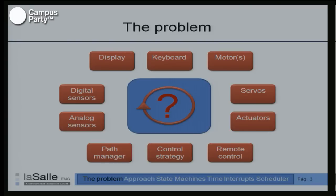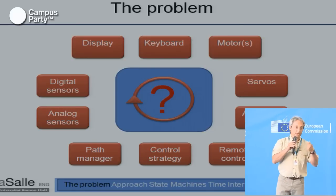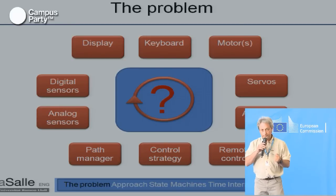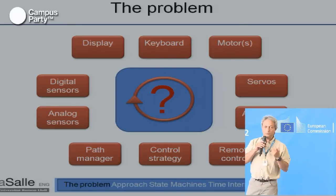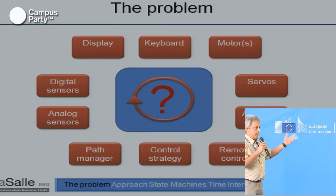All of this is related because digital sensors — doing ranging or calculating position — and analog sensors involve the activity of servos and actuators, all of them simultaneously, based on a control strategy and a path manager. Don't forget remote control, which means a protocol, and a protocol means timeouts and waiting. How do we do all these tasks?